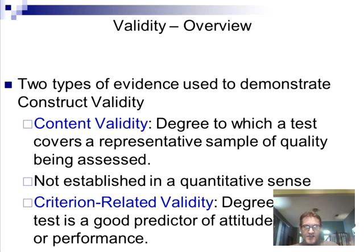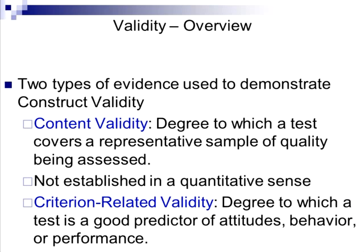Content validity is the degree to which a test covers the relevant domain — but it's not a great measure; it's not quantitative. Criterion validity is much more important: the degree to which a test is a good predictor. For example, does my measure of smiles per hour allow me to predict other things related to happiness, such as the hormones that are associated with happiness?